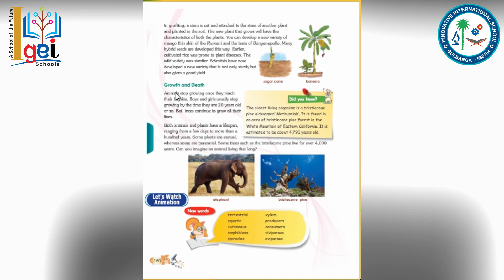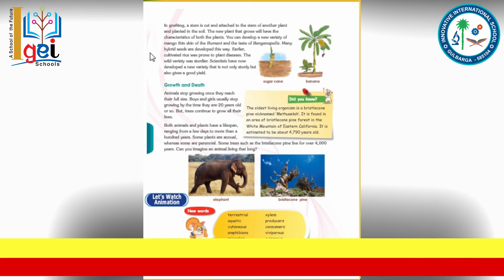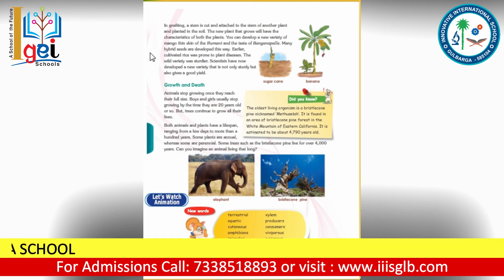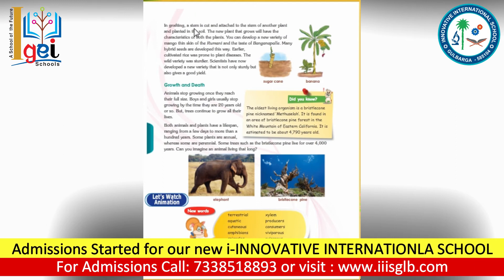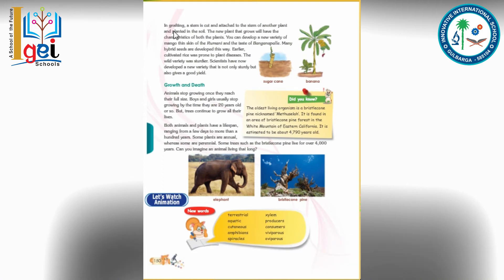Have you seen what is meant by grafting? Grafting is when a cutting of a stem is put in soil and it grows on its own — it does not require any seed to produce the plant. In grafting, a stem is cut and attached to the stem of another plant.